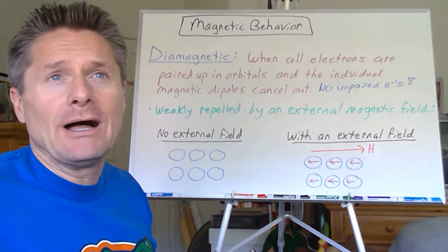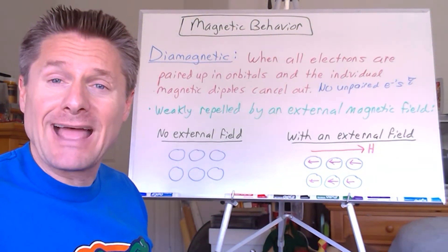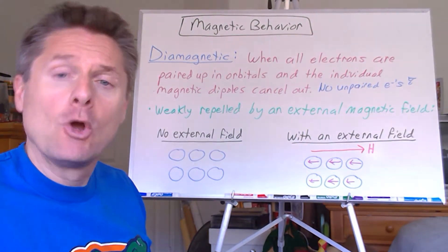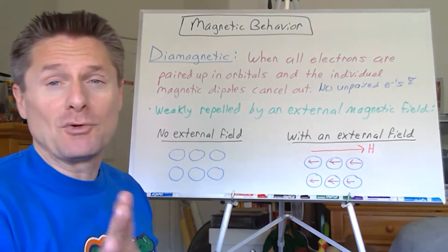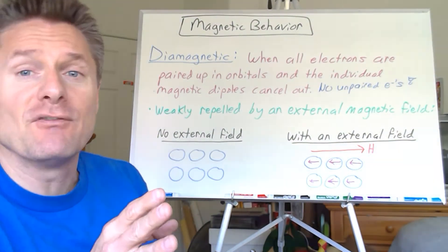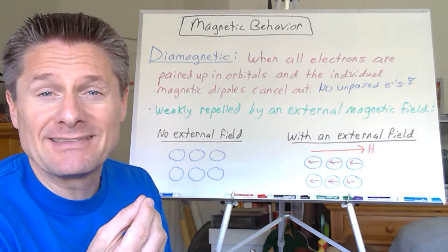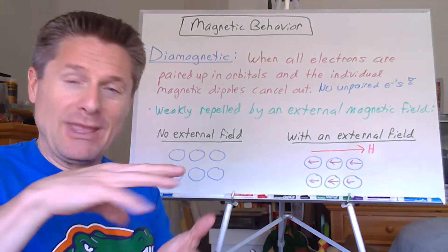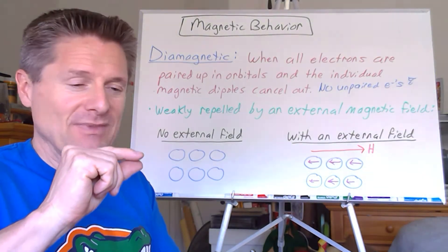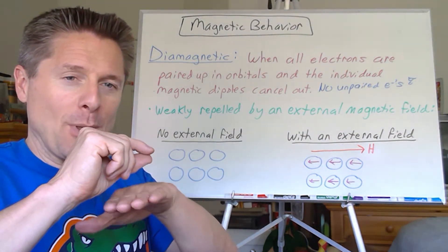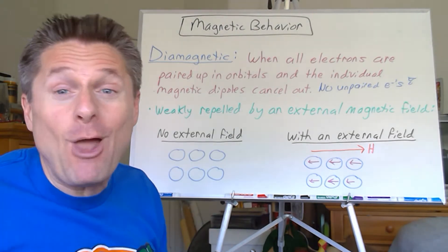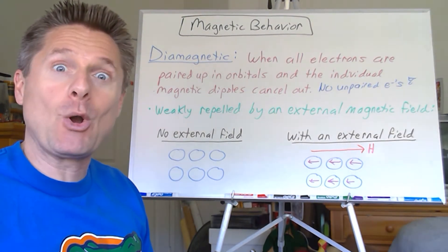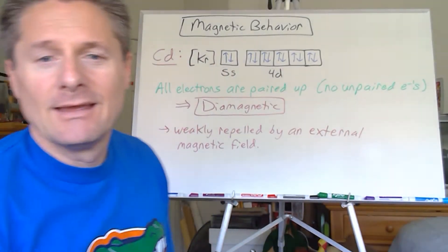Let's do a couple of examples looking at orbital box diagrams and predict whether something is paramagnetic or diamagnetic. If you got time, go check out some videos of diamagnetic substances. You can see it looks like levitation. It floats. It's really cool.